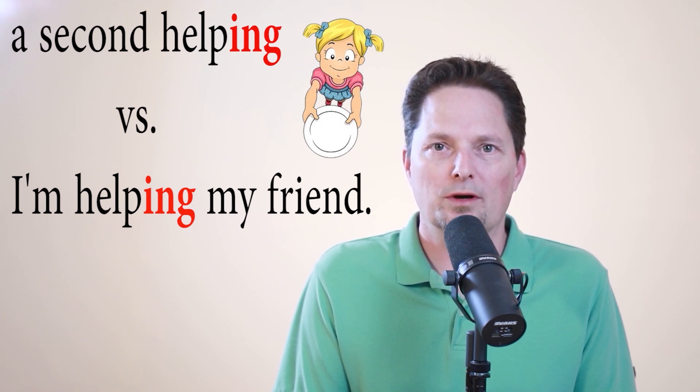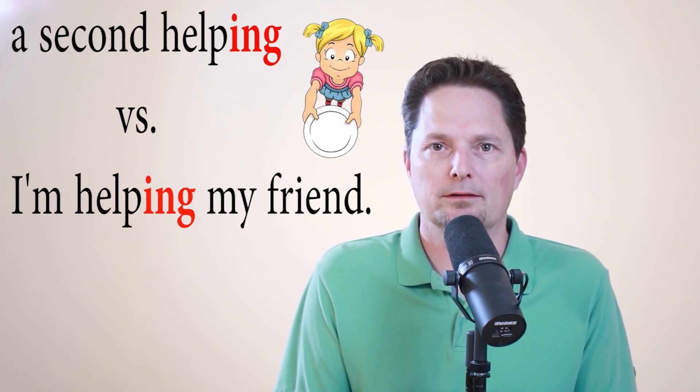When helping is a noun, we have to pronounce it with a long ee sound. Helping for the second syllable, the second vowel. Use the long ee like green beans. Helping. A second helping. We cannot say a second helping. It's always pronounced a second helping.